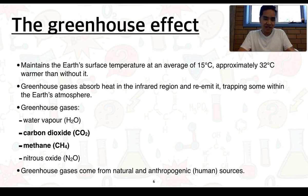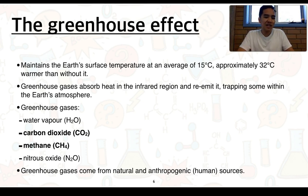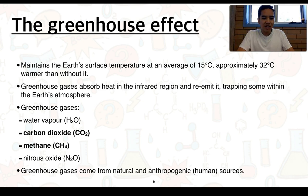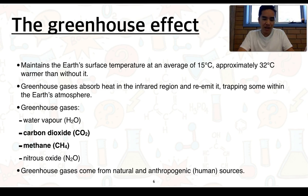The temperature is maintained at roughly 15 degrees Celsius — approximately 32 degrees Celsius warmer than without this greenhouse effect. These greenhouse gases absorb heat in the infrared region and re-emit it, trapping some within the Earth's atmosphere. Some of these greenhouse gases include water vapour, which we naturally find in our atmosphere. Carbon dioxide and methane are our two big focus ones. Others include nitrous oxide, ozone, and chlorofluorocarbons, which have been a known issue in the past.